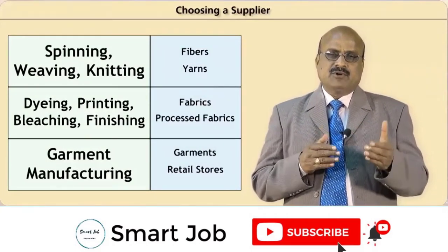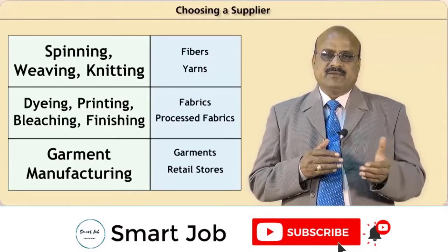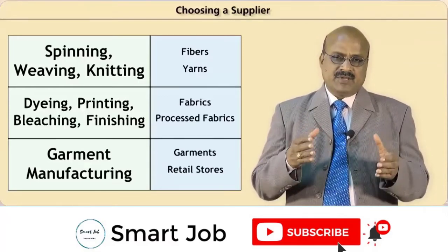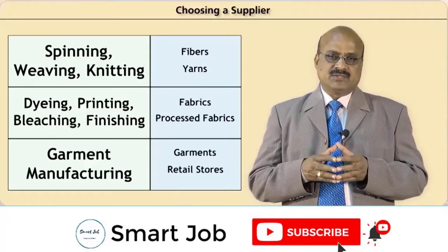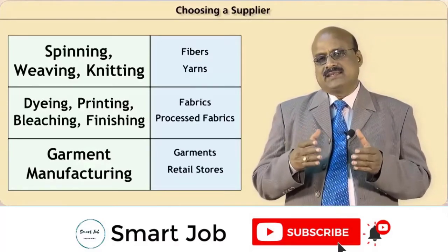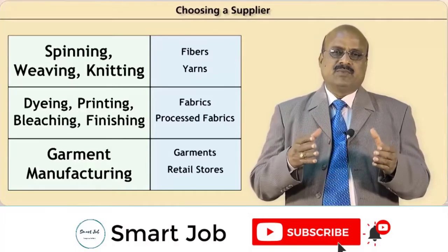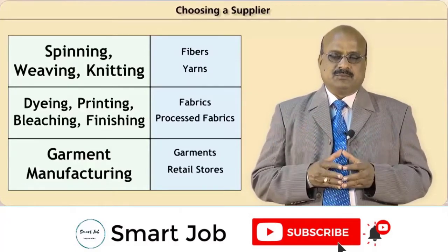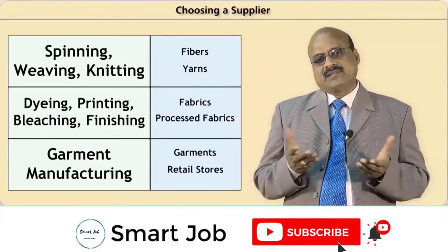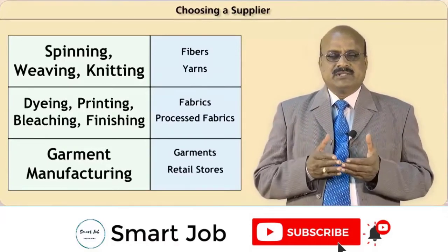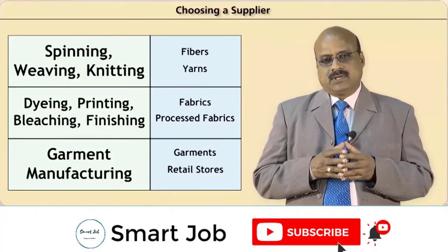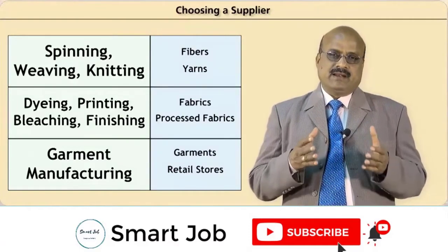Let us now look at the supply chain of apparel business. The supply chain involves various processes like spinning, weaving, knitting, dyeing, printing, garment manufacturing, and then bringing the merchandise to retail stores. Each process has its own lead time ranging from a minimum to a maximum. There are also challenges regarding the behavior of apparel customers — how much, at what price, and when do they buy? These are the challenges that need to be addressed.